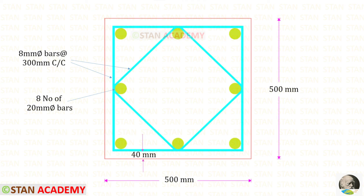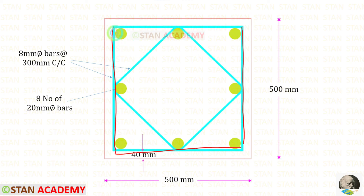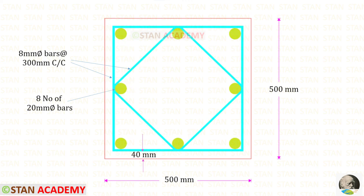Here you can see the cross section of the column with reinforcement details. Let us keep the clear cover as 40 millimeter, with lateral ties arranged accordingly. Now we are going to end this session. Thank you for watching this video.